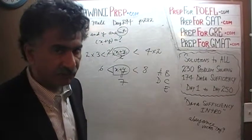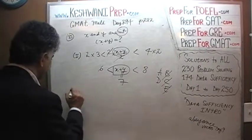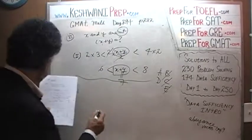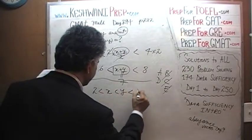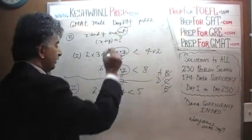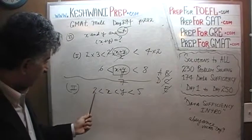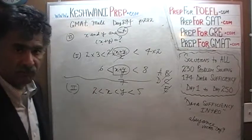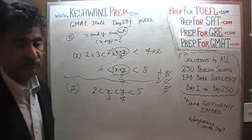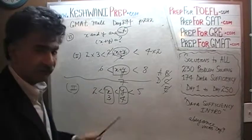Now that we have established that the first statement by itself is sufficient, we know the answer cannot be B, C, or E — it would have to be either A or D. The second statement tells us that 2 is less than X, which is less than Y, which is less than 5. Since we are told they are both integers, how many integers can possibly fall between 2 and 5? Only 3 and 4. Since X is less than Y, X would have to be 3 and Y would have to be 4.